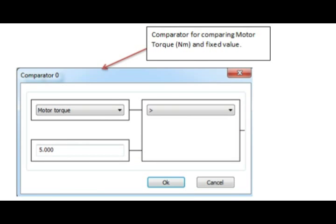Here you see my comparator. This is where I make the comparison from motor torque to a fixed value. In this case, it is 5 newton meter. This means if you have motor torque higher than 5 newton meter, you will have a high on the comparator output.